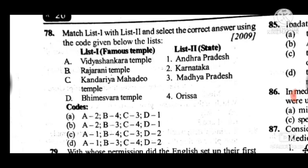Question 78 is a match-list question matching famous temples with their states. Answer is A: Vidyashankara Temple is in Karnataka; Raja Rani Temple is in Odisha; Kandariya Mahadeva Temple is in Madhya Pradesh; and Vimeshvara Temple is in Andhra Pradesh.